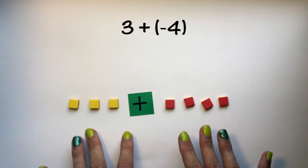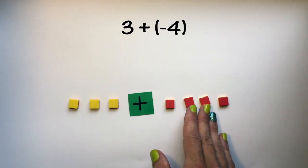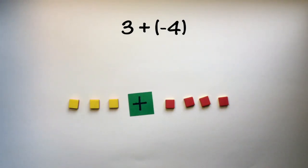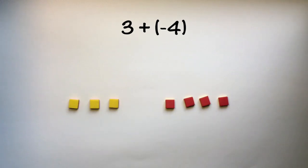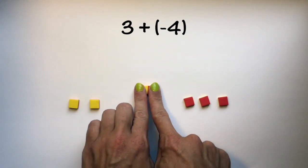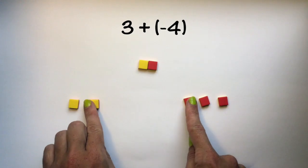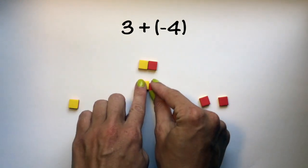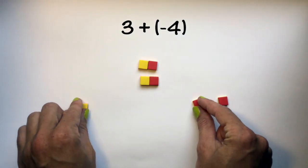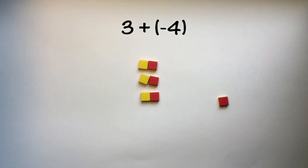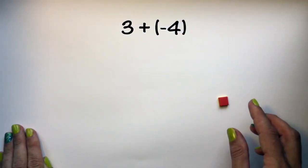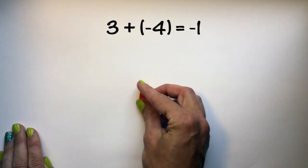Once we've changed this to addition and changed the sign of our second number, we're able to remove the sign and create zero pairs. Remove our zero pairs and we are left with negative one.